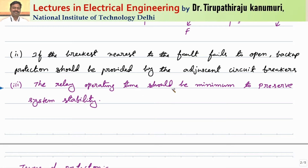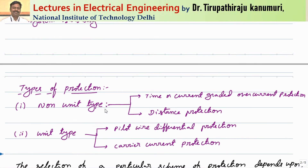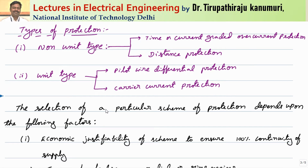The relay operating time should be minimum so that system stability is not affected. The different types of protection can be broadly categorized into two types: non-unit type and unit type. Unit type means one particular part of your transmission line or a particular zone is protected. Unit types include pilot wire differential protection — we have seen differential protection in module number 3.